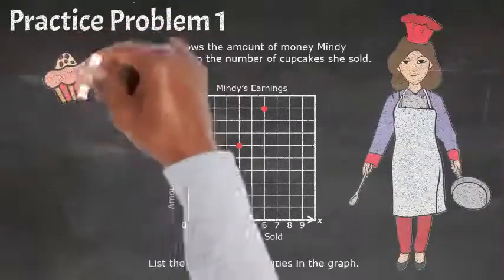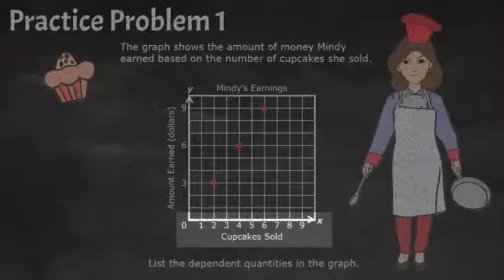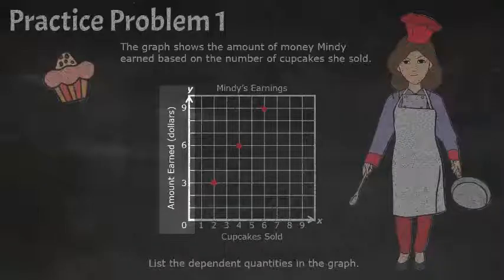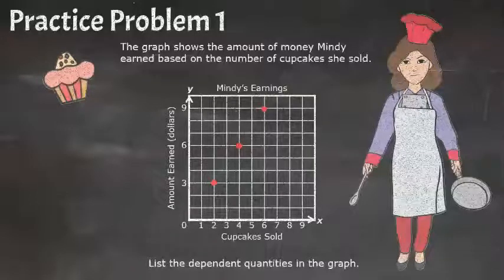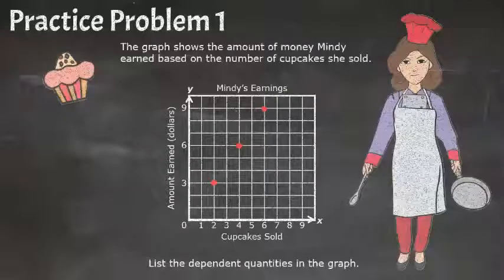Our two variables are the x-axis, cupcake sold, and the y-axis, amount earned. The dependent quantity is always represented on the y-axis, as the amount earned would depend on the number of cakes sold.